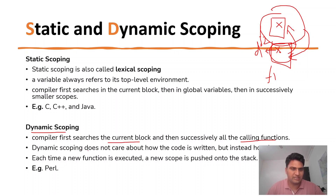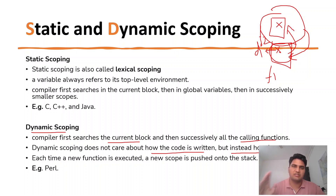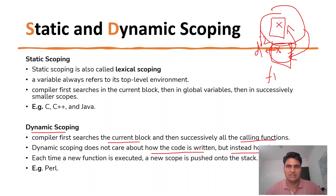I will also show this in the program. Dynamic scoping does not care about how the code is written, but instead how it executes. Because when we study C++, we study polymorphism — in runtime, we decide which function we are going to call. This is dynamic scoping. The static scoping is determined at compile time, but dynamic scoping is determined at runtime.